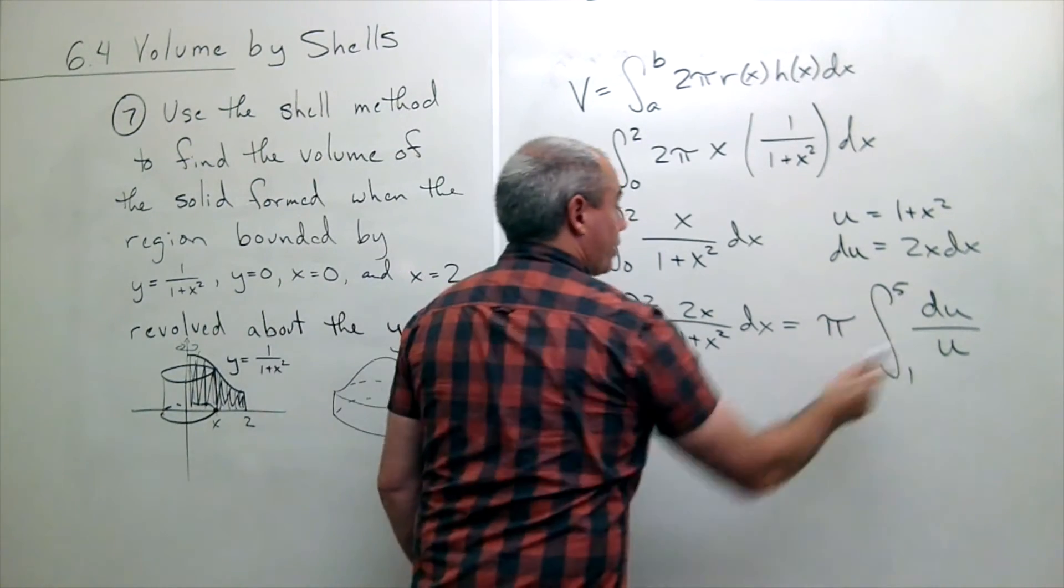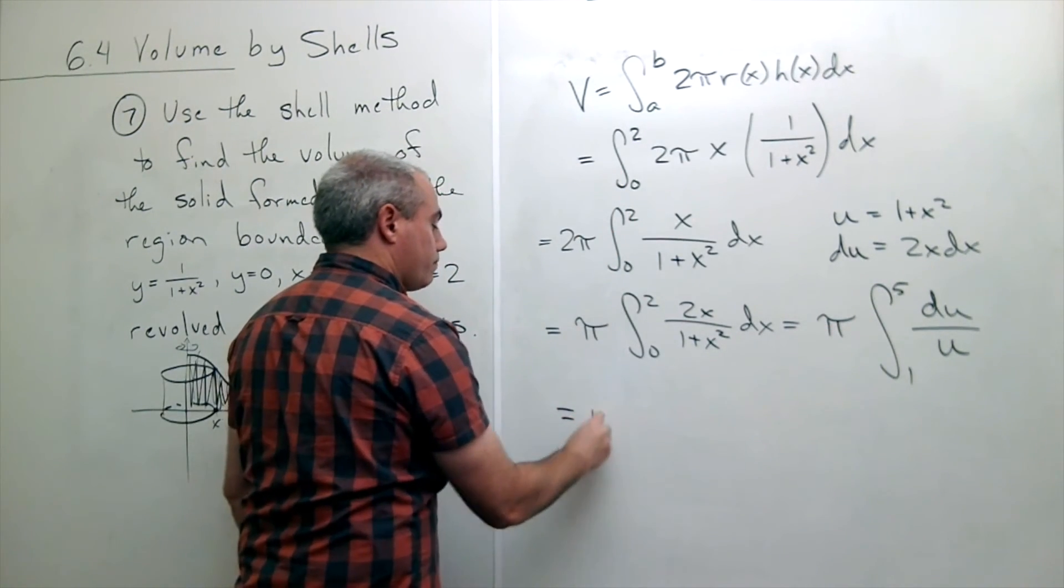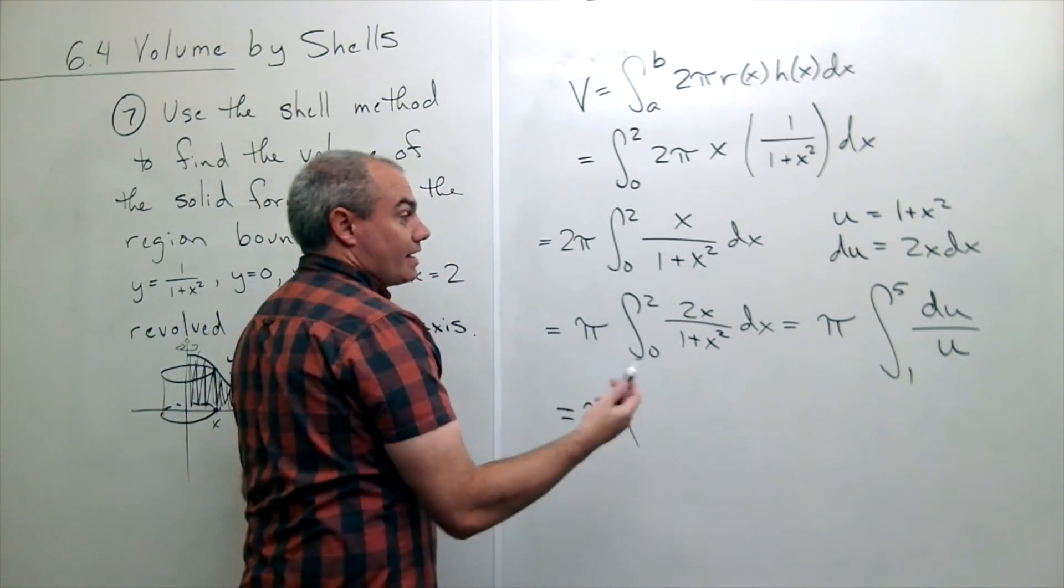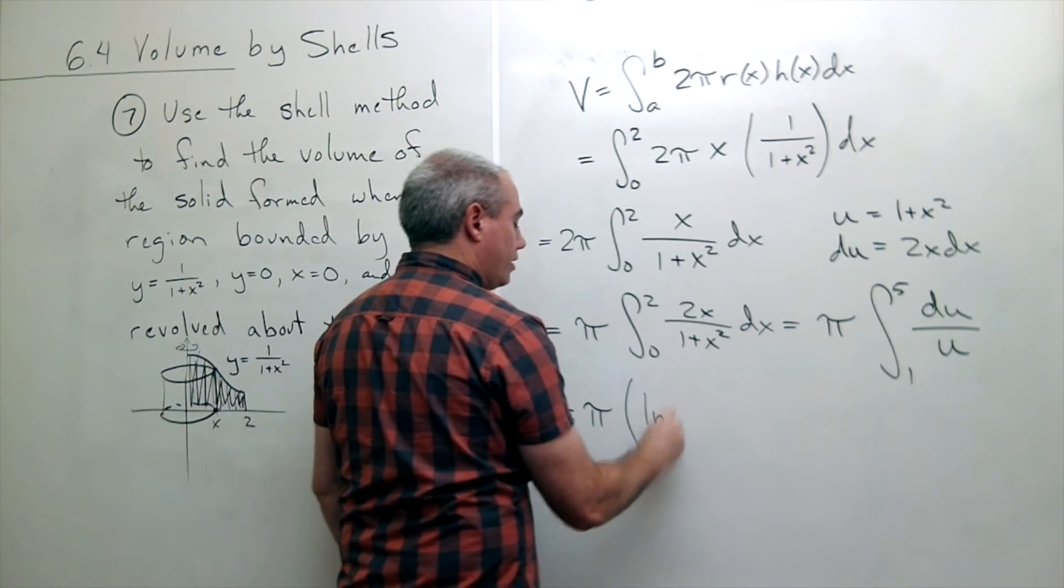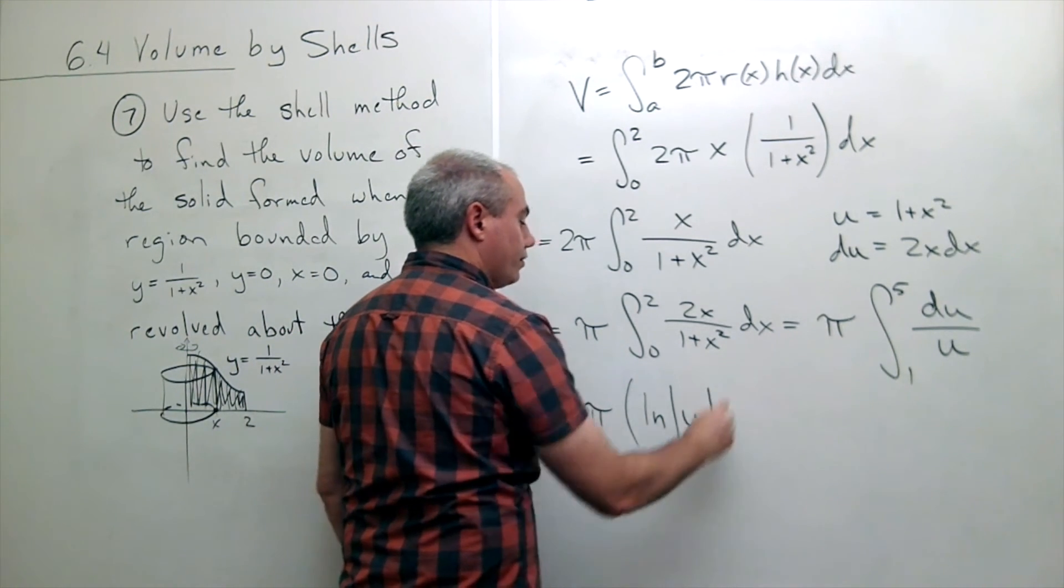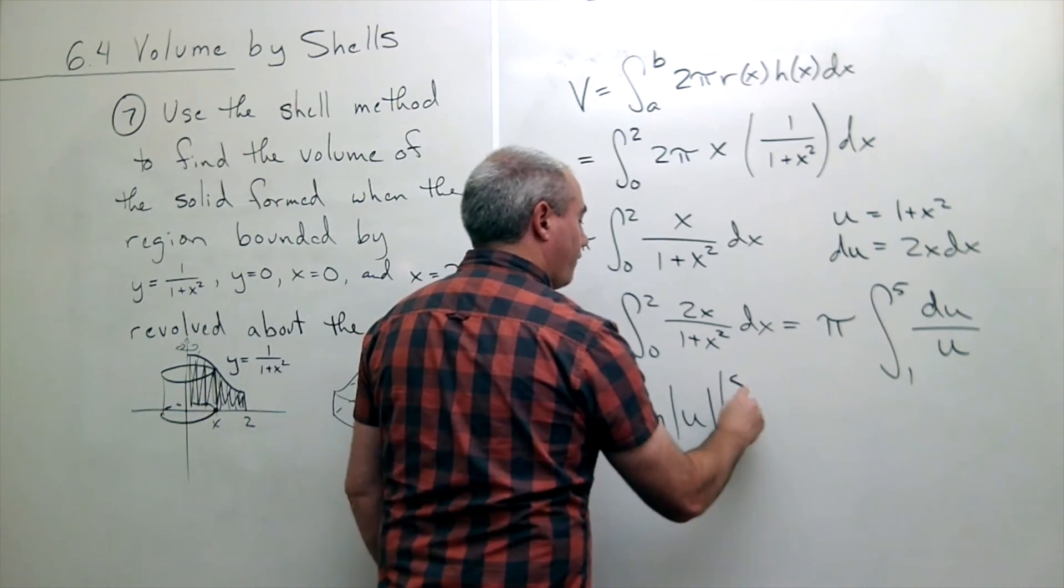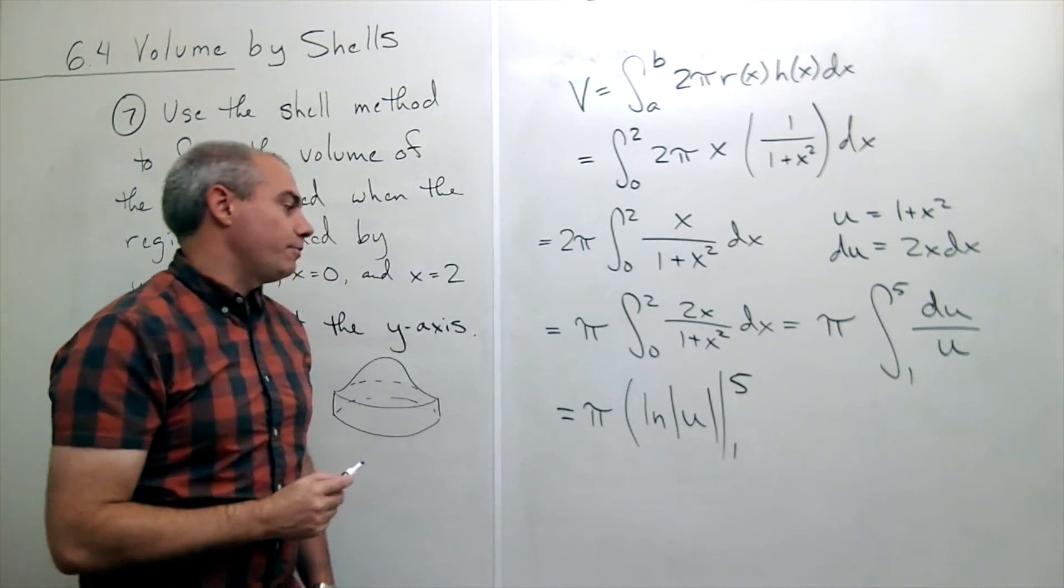This is a simple integration so let's do it. This is pi. Antiderivative of 1 over u is ln of the absolute value of u evaluated from 1 to 5. Let's plug things in.